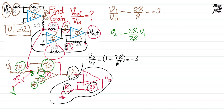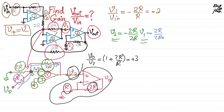Similarly, now short V1 to ground and consider only Vout. Vout drives current through the two 2R resistors in series — no current enters the op-amp's infinite-impedance input. This again forms an inverting amplifier structure, so the gain is minus feedback resistor 2R divided by input resistor 2R. Therefore, the contribution of Vout to V2 is minus Vout. Combining both contributions: V2 = minus V1 minus Vout.